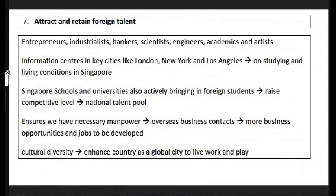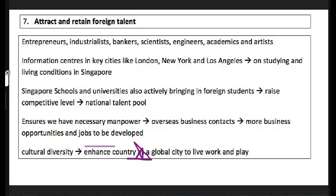The three examples: attracting entrepreneurs, industrialists, bankers, and scientists; information centers in key cities; and bringing in foreign students through universities. Expatriates are also given housing relief by companies. Foreign talent raises competition levels in sports and academics and brings friendly rivalry. The effect is that Singapore gains the manpower and business contacts needed for development, and cultural diversity enhances Singapore as a cosmopolitan global city.